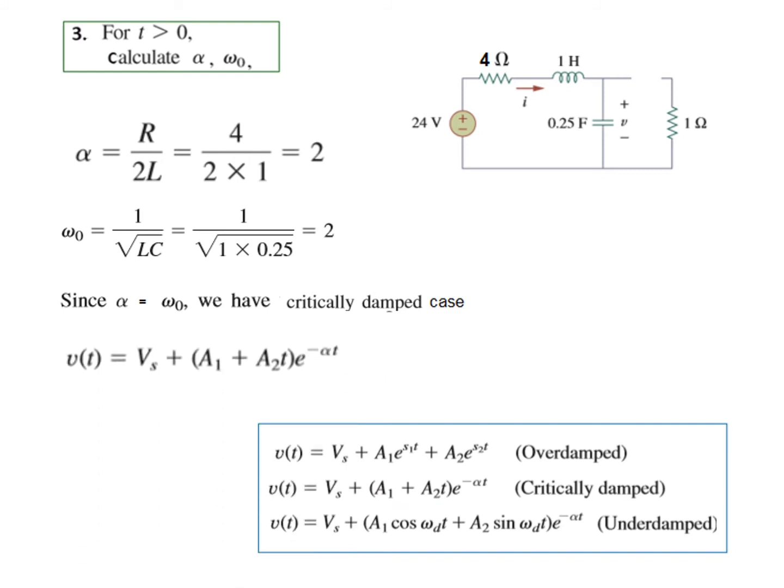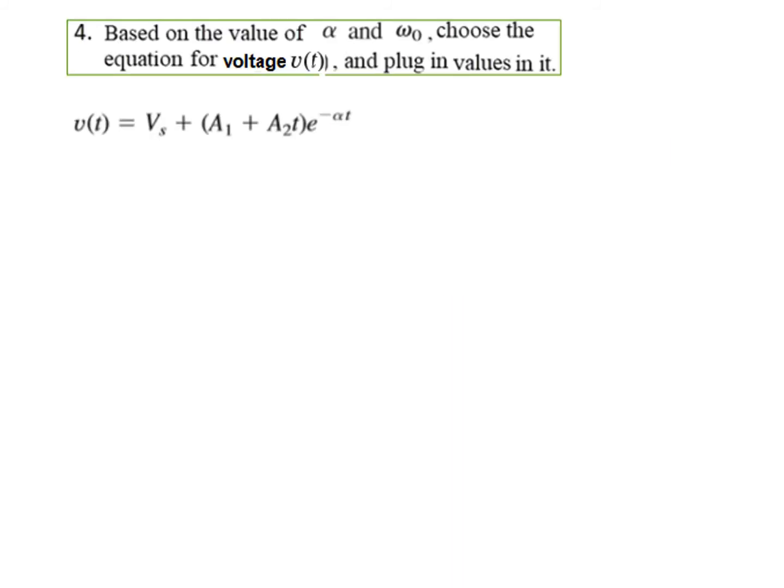This is the equation. We will now move forward with this. This equation, alpha we have already known. We will plug in the value of alpha. We now need to find Vs, the steady state or the final voltage. Plug in the value of alpha which was 2. This is the circuit. Now T greater than 0. Now the circuit is in steady state. The inductor is short circuit. Capacitor is open circuit. So whatever is the source voltage, that will appear across the open circuit voltage. So Vs is now 24 volt.